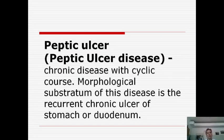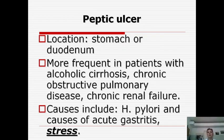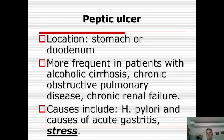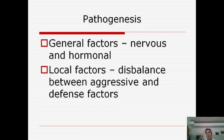The next disease is peptic ulcer or peptic ulcer disease. This is a chronic disease with a cyclic course; morphologically we see the appearance of a chronic ulcer in the stomach or duodenum. Localization is the stomach and duodenum only. It is more frequent in patients with alcoholic cirrhosis, chronic obstructive pulmonary disease, and chronic renal failure. The first and most important cause of peptic ulcer is stress, followed by Helicobacter pylori action and occurrence after acute gastritis. In pathogenesis, there is a disbalance of hormonal and nervous systems as general factors, and locally a disbalance between aggressive and defensive factors of the stomach.